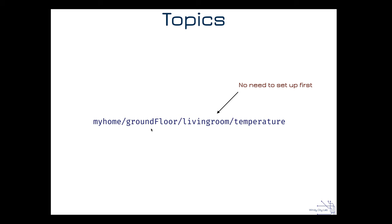The next level might be organized by floor — ground floor, upstairs, or basement. Within the floor you might have living room or dining room, and then finally what you're reporting about in that particular location. You can literally publish to this string, this topic. And if another client has subscribed to this same string or topic, they will get the message.